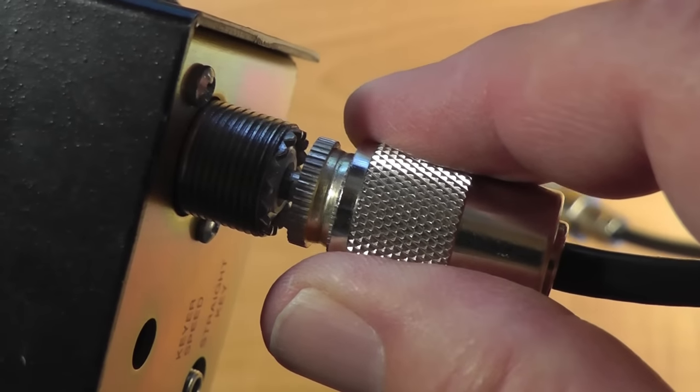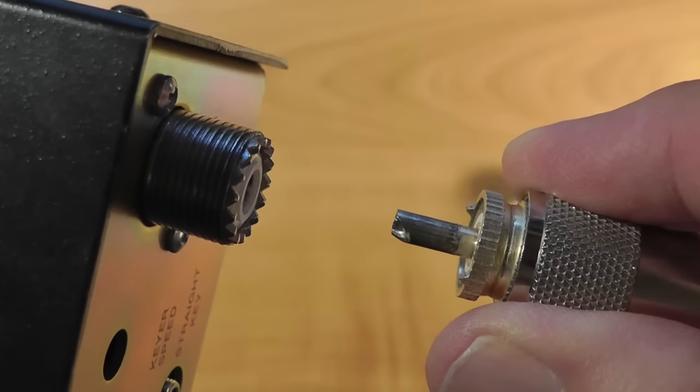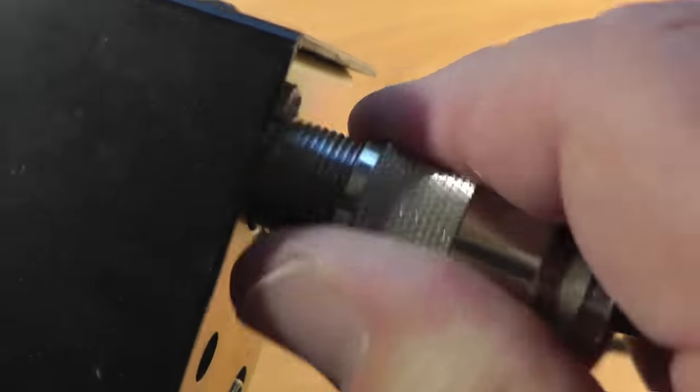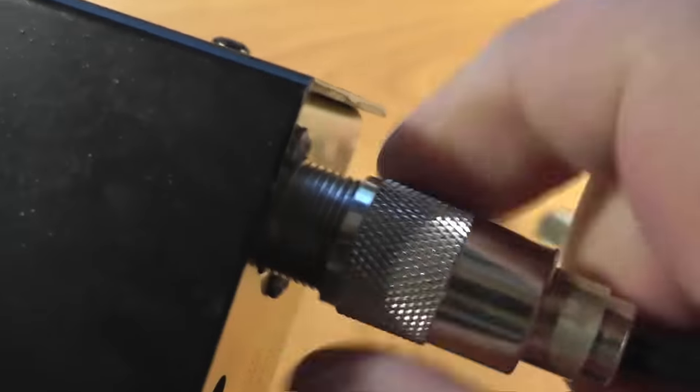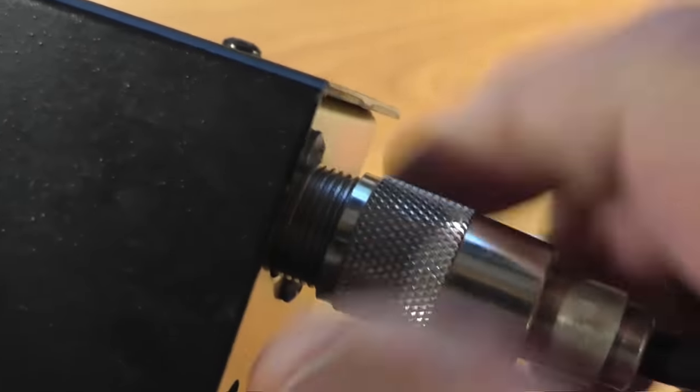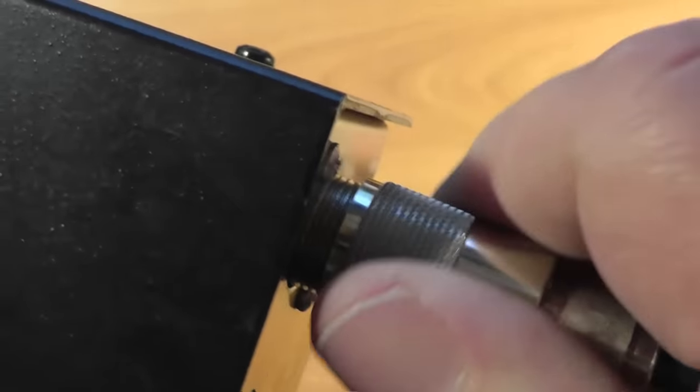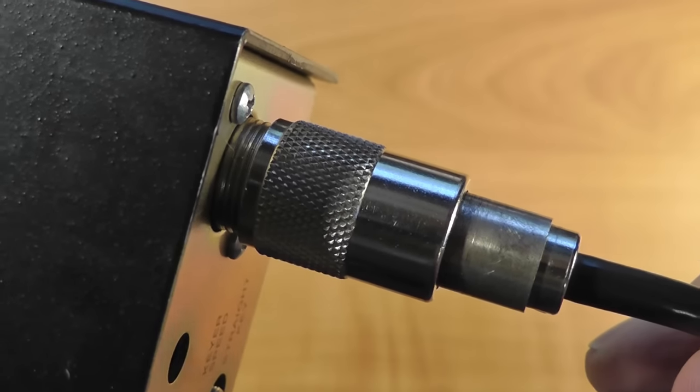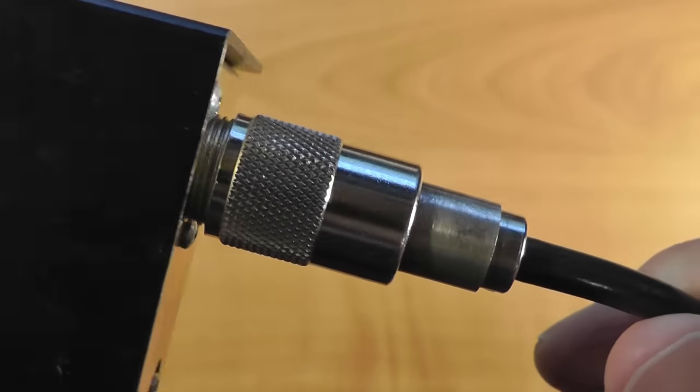To disconnect the cable, unthread the ring until it is completely free of the socket. Then, using the connector and not the cable, pull the center pin out. These connectors are quite sturdy and will last for many years. I point out that this connection is not waterproof, so if you use this method to connect to an outdoor antenna, you'll need to waterproof the connection.